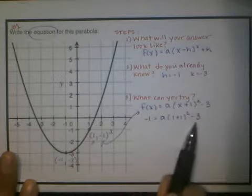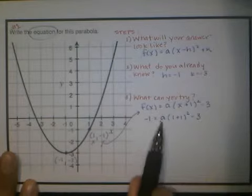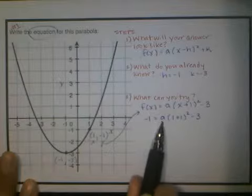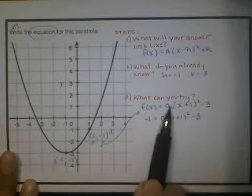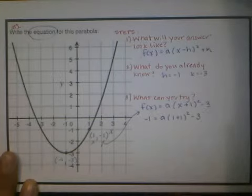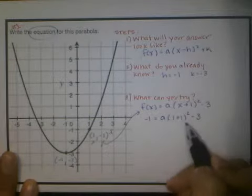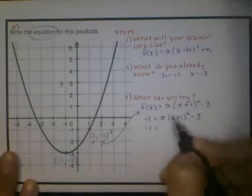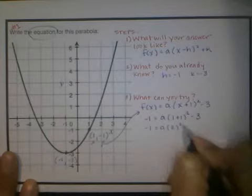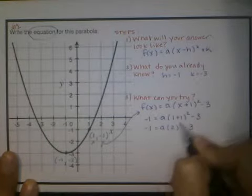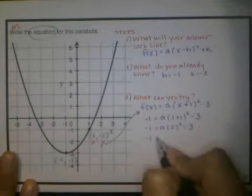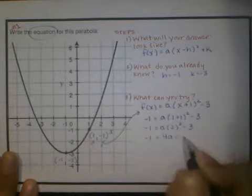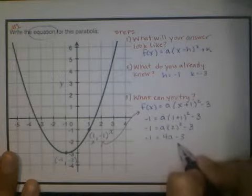Which will leave me the following equation: -1 = a(1 + 1)² - 3. And what's exciting about this equation is that it's all numbers except for a single variable, so it should be real easy algebra to get this variable by itself. Be careful with order of operations at this point. Make sure that you do inside the parentheses, don't multiply anything. And then exponents makes this -1 = a times 4 - 3.